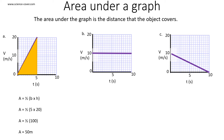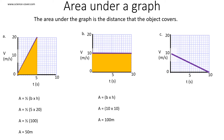In graph B, the velocity is constant. The shape created by the area underneath the graph is a rectangle. To work out the area of a rectangle, you multiply the base by the height — that is 10 times 10, which is equal to 100. So the distance covered by object B is 100 meters. Graph C shows a decelerating object, and again the area underneath the graph is a triangle. Half multiplied by the base times the height gives half times 10 times 10, which equals half of 100, so graph C covers a distance of 50 meters.